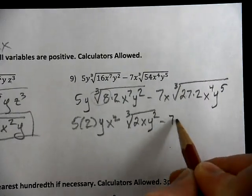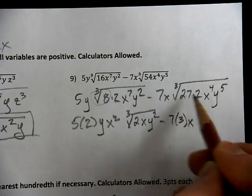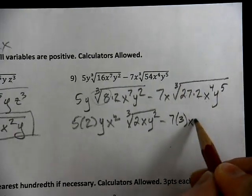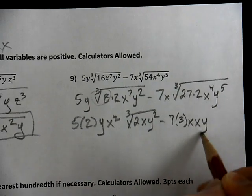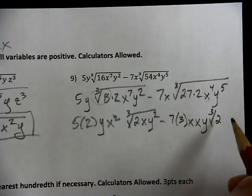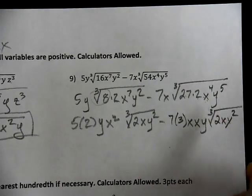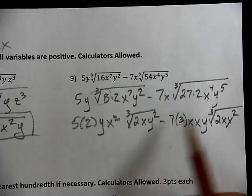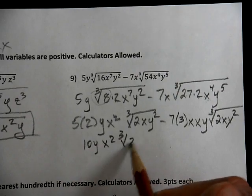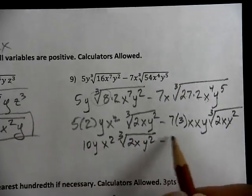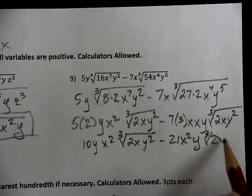Here the cube root of 27 is 3, I have an x out there, I'm not touching the 2, I can pull out an x, another x, I'm leaving x inside, I can pull out one of the y's, that's going to leave me a 2 inside, that's going to leave me an x inside, and that's going to leave me 2 of the y's inside.